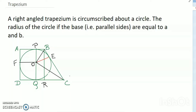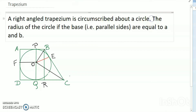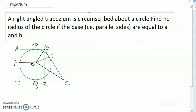Hello dear friends, welcome to my channel. Today's discussion is about a right angle trapezoid. A right angle trapezium is circumscribed about a circle. The radius of the circle, if the bases are equal to a and b — find the radius of the circle.